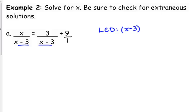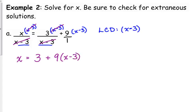They're not on the same side, so we can't put them together. Multiply everything by x minus 3. For that first one, the x minus 3s cancel, so you're left with x. The second one, the x minus 3s cancel, you're left with 3. The last one, nothing cancels, so we have 9 times, make sure it's in parentheses, x minus 3.